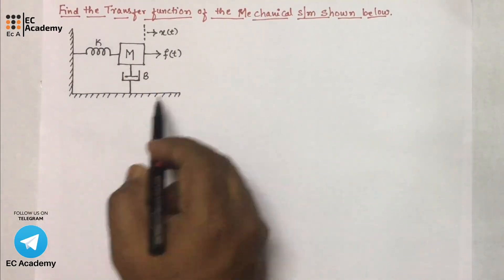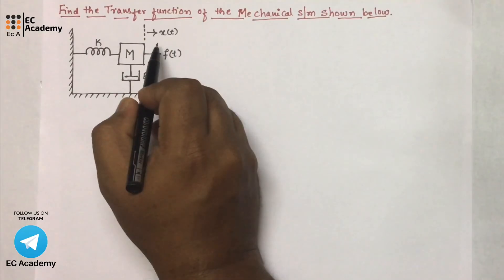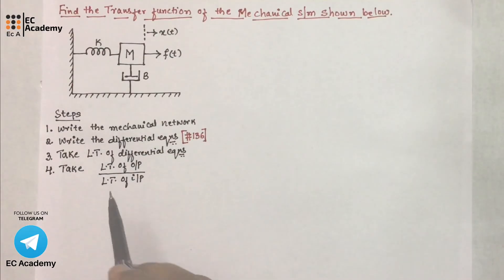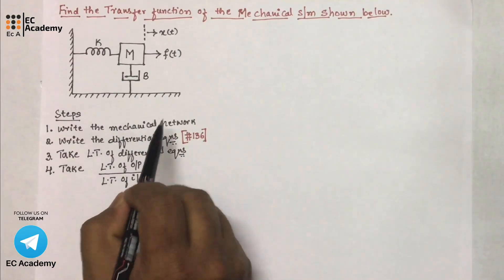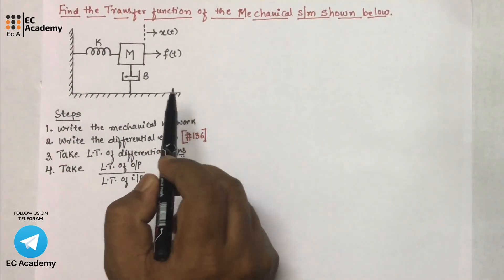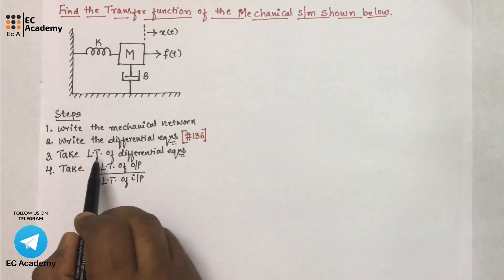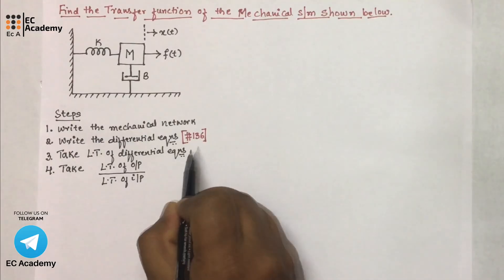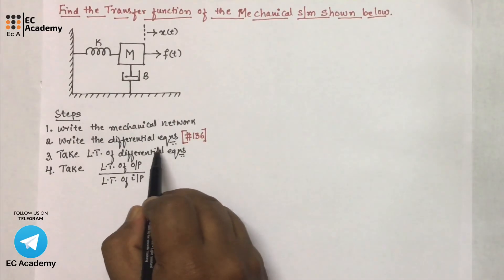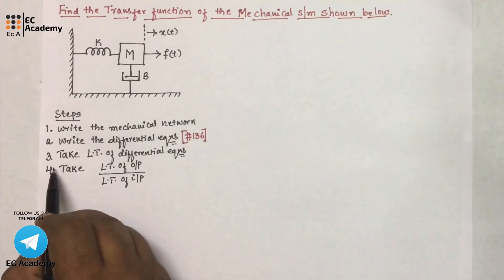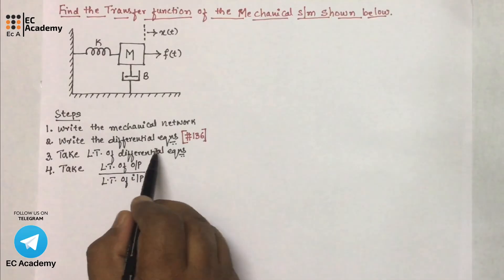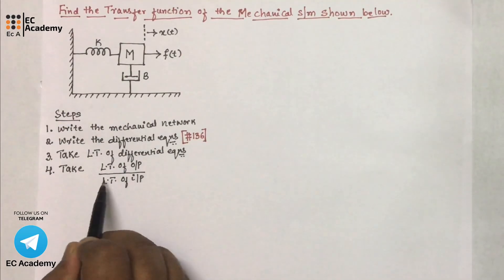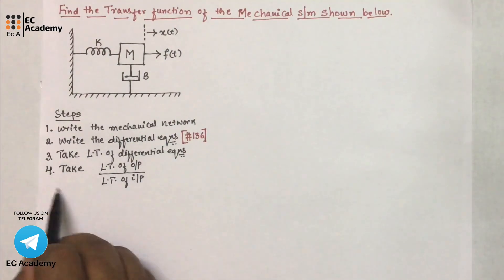In this given mechanical system, the input is f(t) and the output is x(t). To find the transfer function of a given mechanical system, there are four important steps. The first step is to write the mechanical network. The second step is to write the differential equations of the mechanical network — this concept was covered in lecture number 136. The third step is to take the Laplace transform of the differential equations, and the fourth step is to find the ratio of the Laplace transform of output divided by the Laplace transform of input.